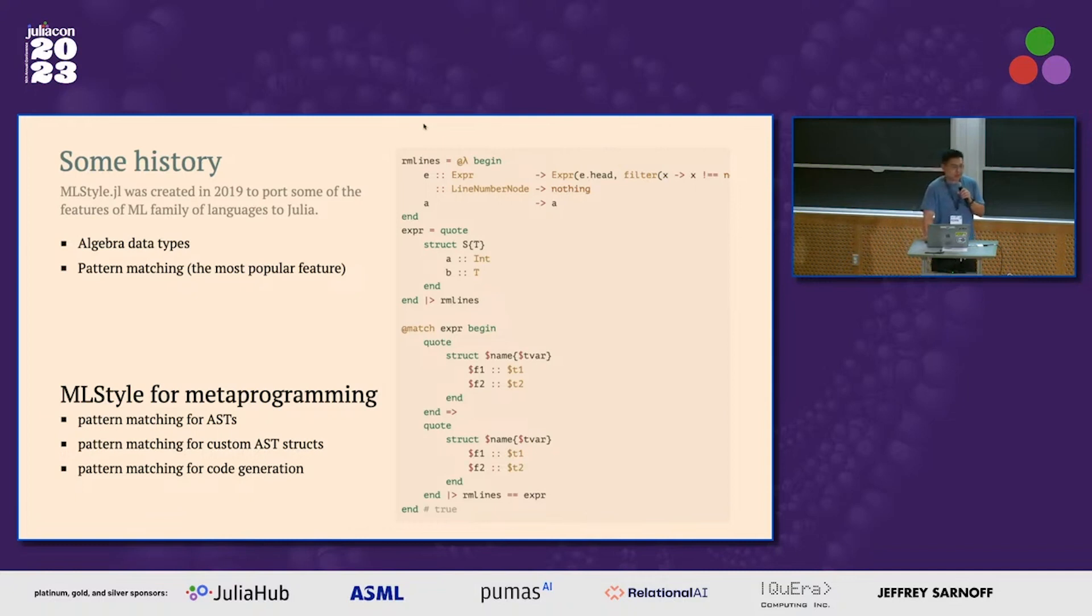So on the right hand side is the example I copied from ML style documentation. Here we can see that you can natively use ML style pattern matchers to match some existing Julia ASTs like this. This match structure definition and then you can remove the lines of this expression and check if they're equal.